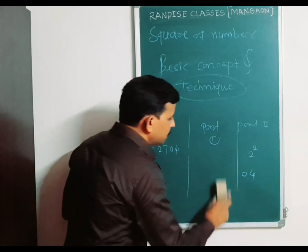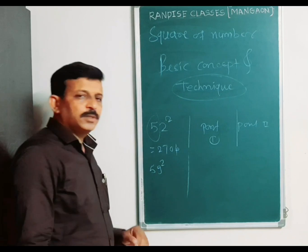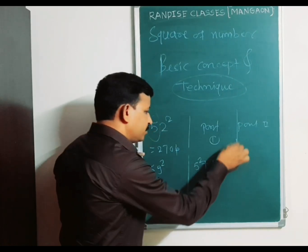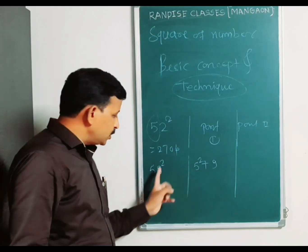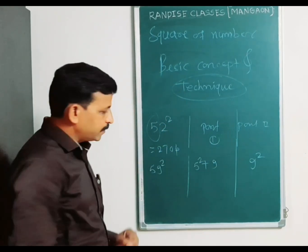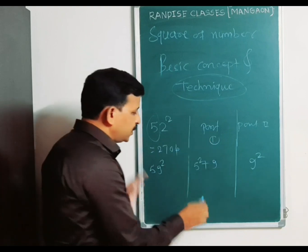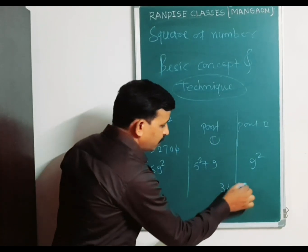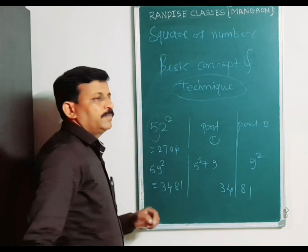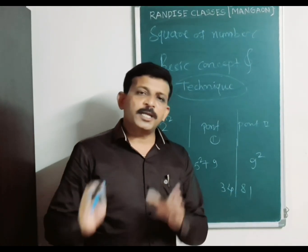Use the same technique on the second example: 59 square. Here 5 is the tens digit. Part 1 is 5 square plus 9 — that is the unit place digit. Part 2 is 9 square. So 5 square is 25, plus 9 means 34. And 9 square is 81. Therefore the square of 59 is 3481. Very easy technique when the unit place number is 5 or the tens digit is 5.